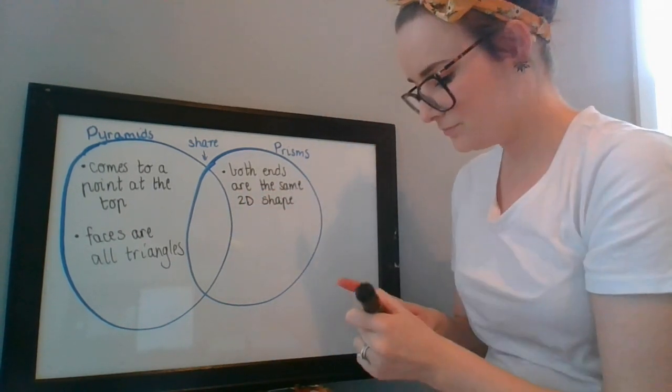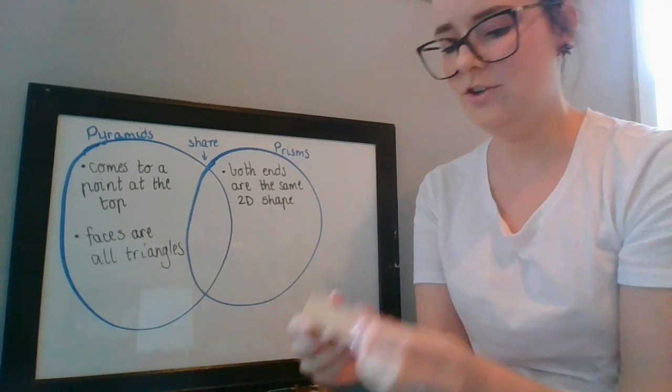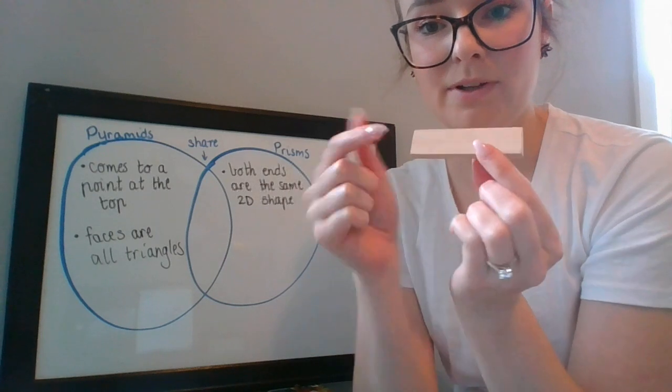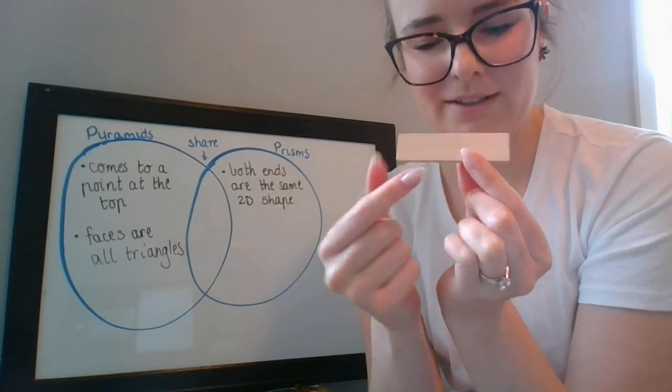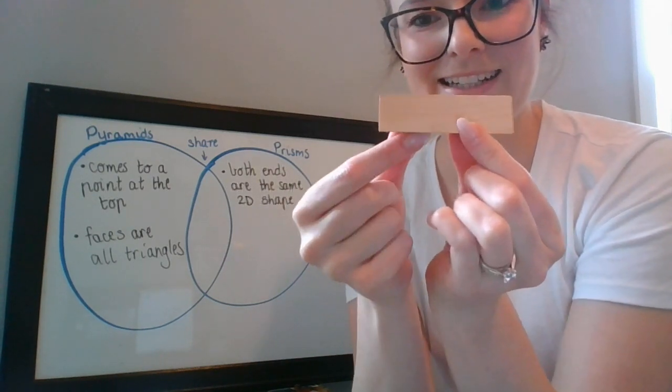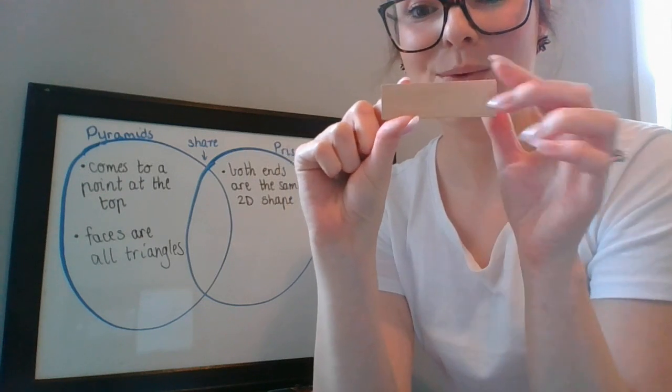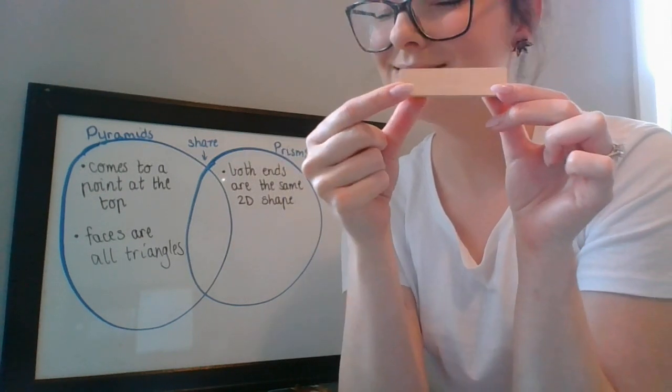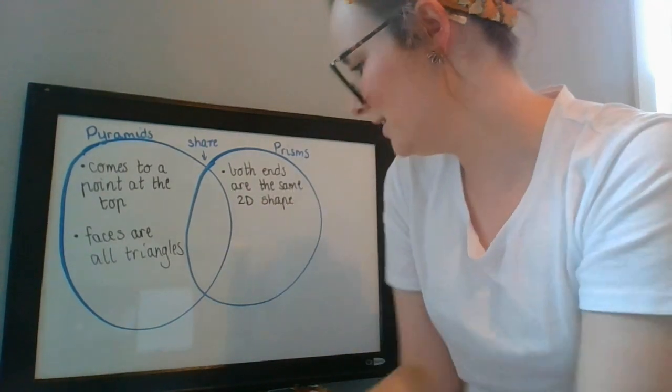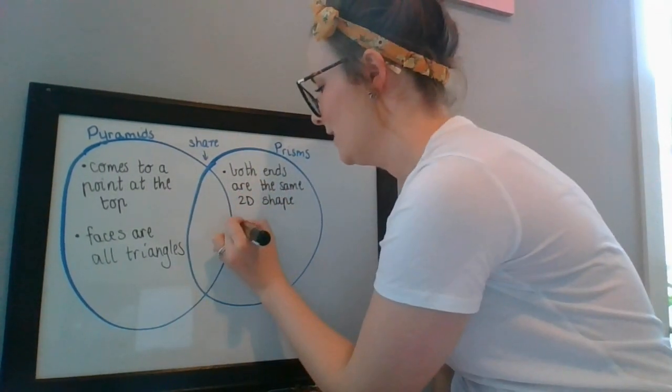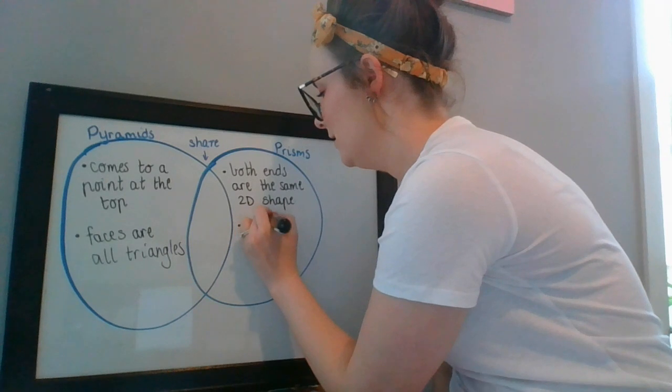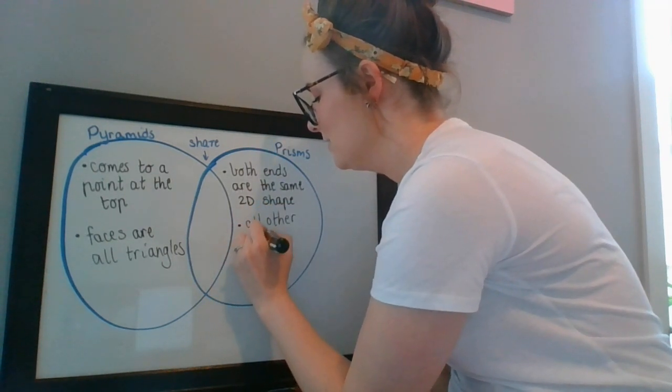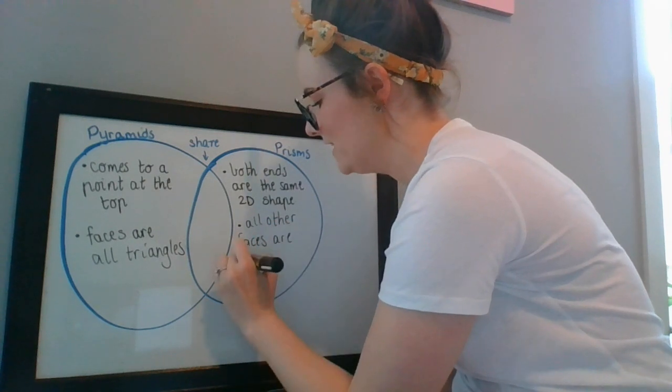Okay, what else do I know about my prisms? How do I know it's a prism? How do I know it's a prism? Little hint. Okay. All of its other faces are rectangles. All other faces are rectangles.